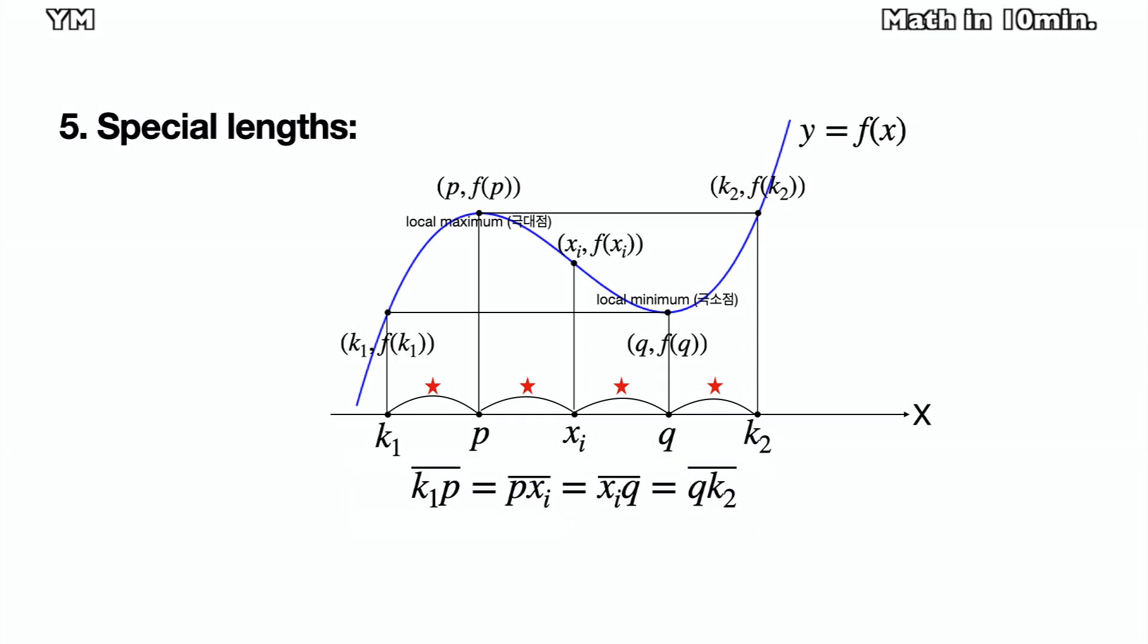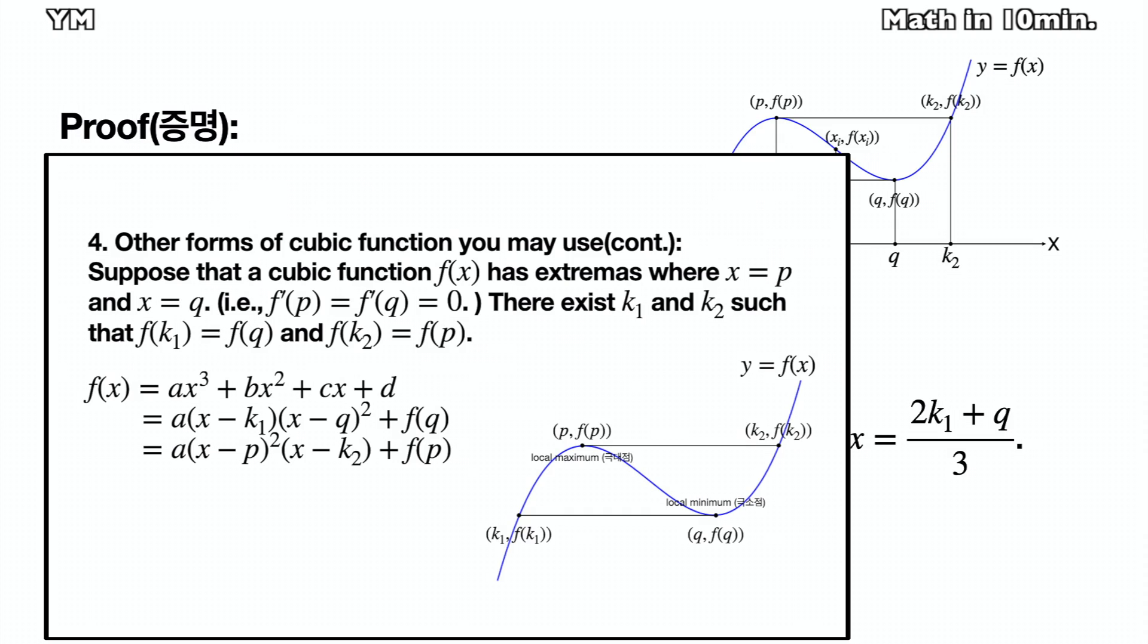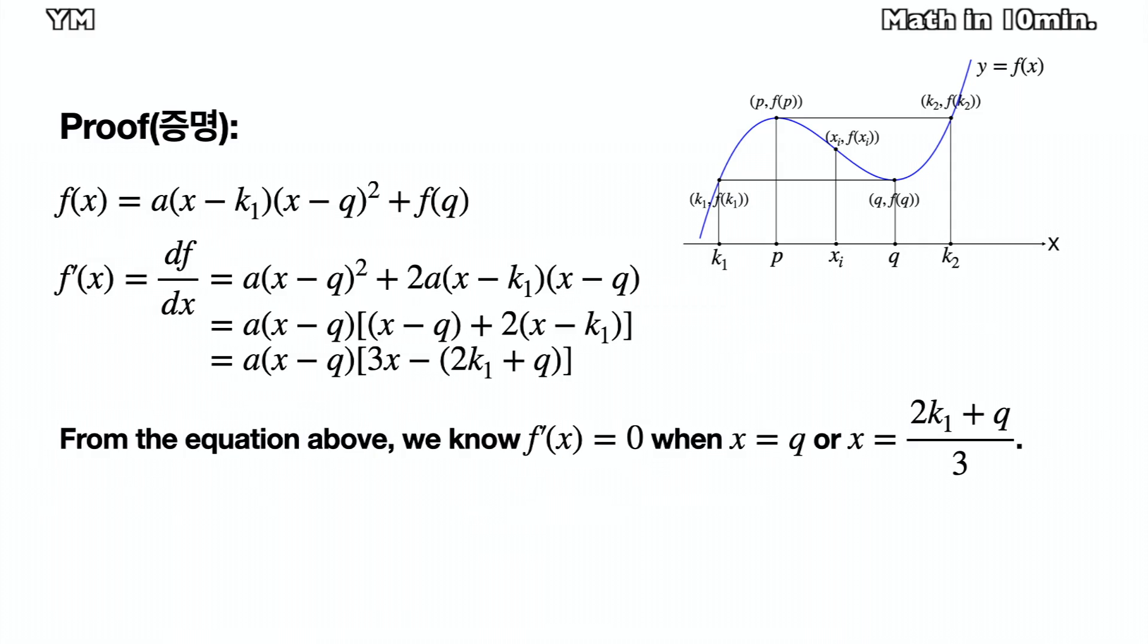Let's prove this. I am going to use one of the equation forms previously explained. That is a(x - k1)(x - q)² + f(q). If you take derivative f by x, you get a(x - q)² plus 2a(x - k1)(x - q). And if you simplify this, you get a(x - q)(3x - 2k1 - q).